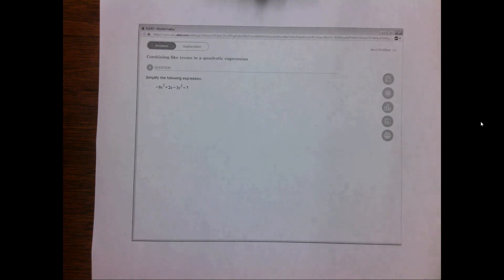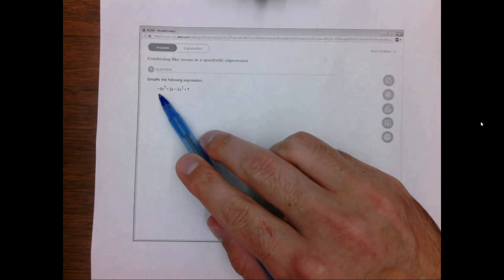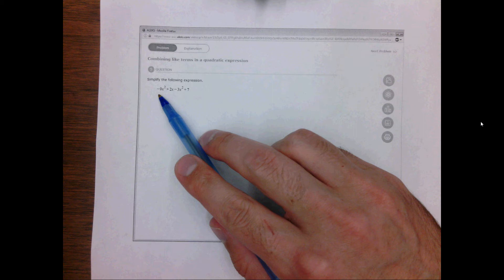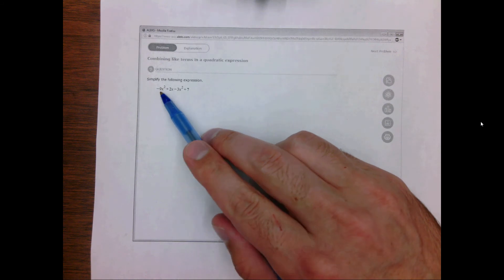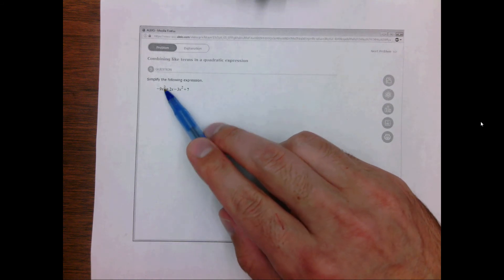In this question we have a quadratic expression where we would like to combine like terms. Like terms are any numbers times a variable raised to the same power.